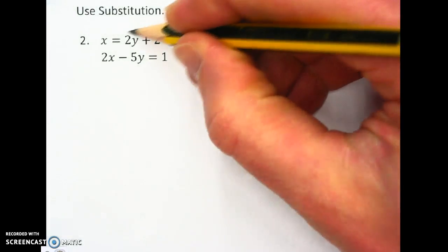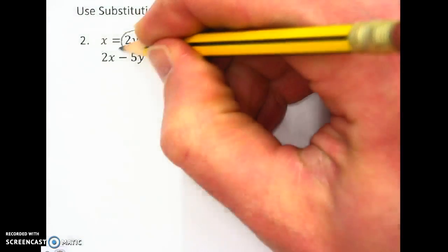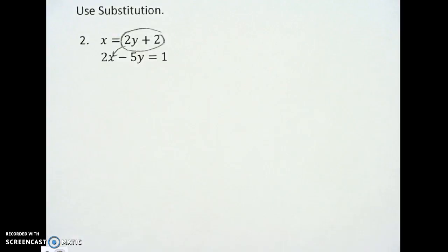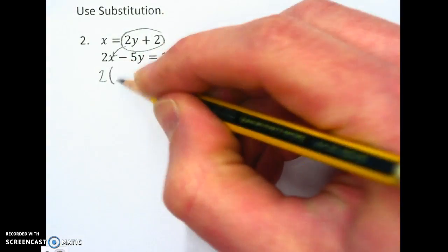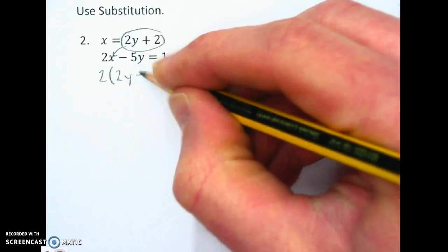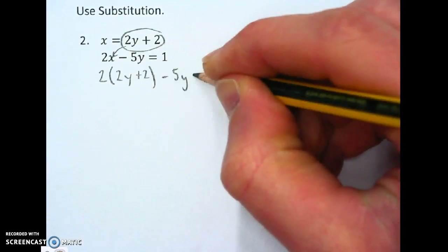This top equation has x by itself, so we're going to substitute to solve this system. I'm going to put this in here for x in the bottom equation. So I'll have 2 parentheses 2y plus 2 minus 5y equals 1.